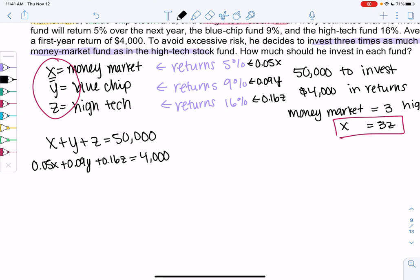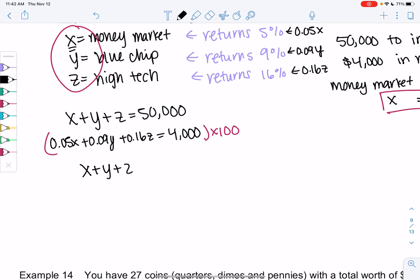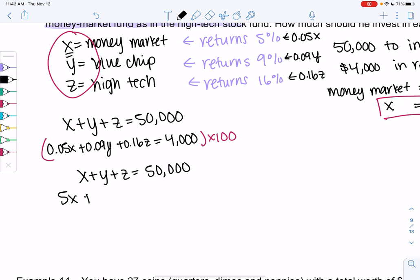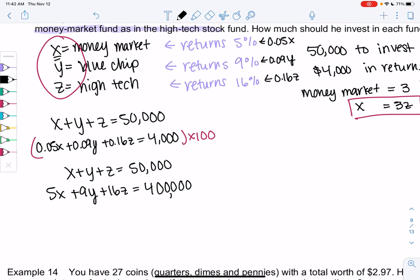I'm not really a fan of the decimals, so I'm going to multiply by 100 to get rid of those ugly decimals. Because then 0.05 becomes 5. So we know X plus Y plus Z equals 50,000, and we know 5X plus 9Y plus 16Z equals 400,000. I could add this third equation. I think it'll be easier to just replace X with 3Z so that we only have two variables.